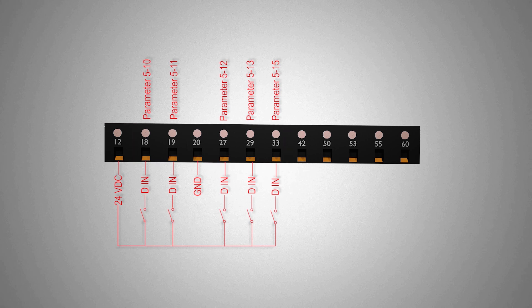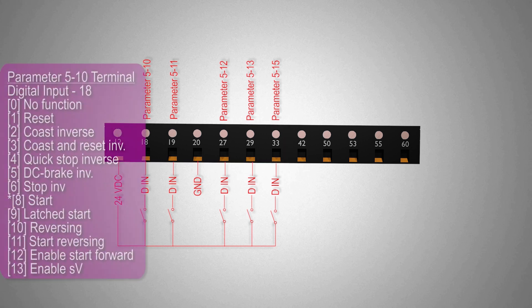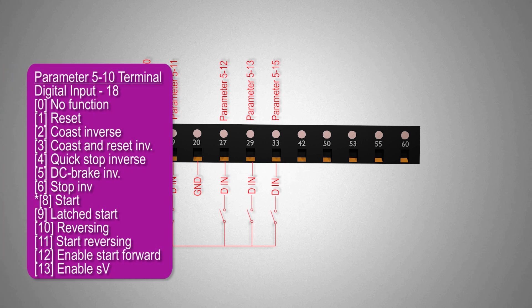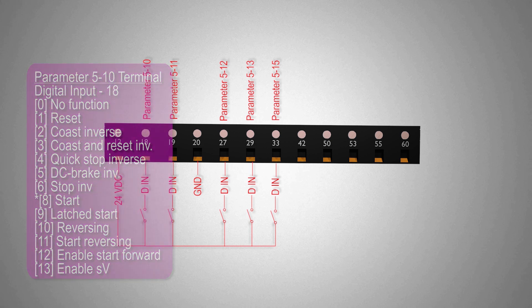Terminal number 18 to terminal number 33 are the digital inputs. These inputs are programmable as per our operation requirements. Parameters 5-10 to 5-15 are used to program functions like start, stop, reverse and reset errors for these digital inputs.